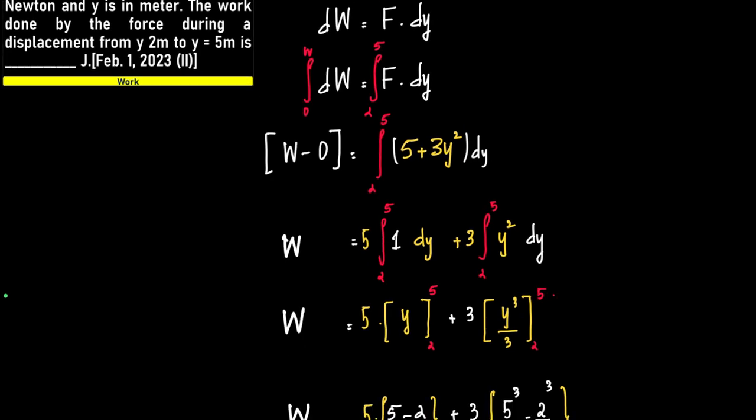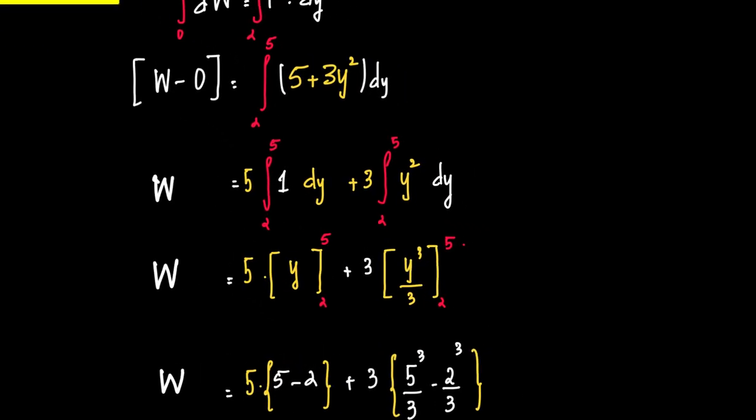Now, to make the calculations more clear, I will split it, open the brackets. So we have 5dy plus 3y squared dy.